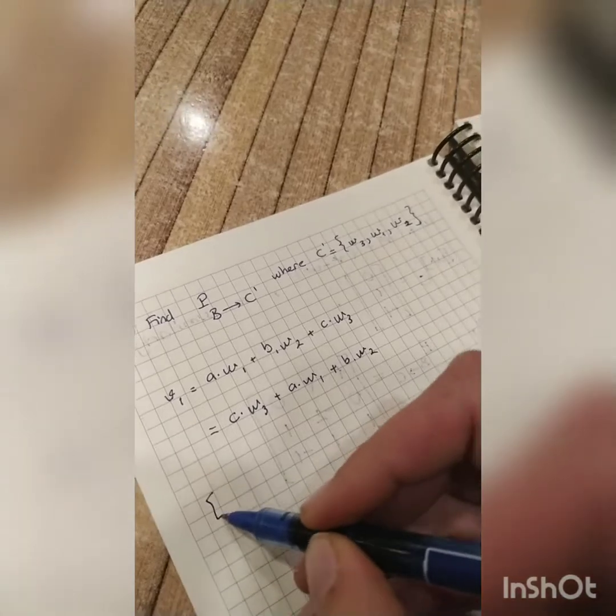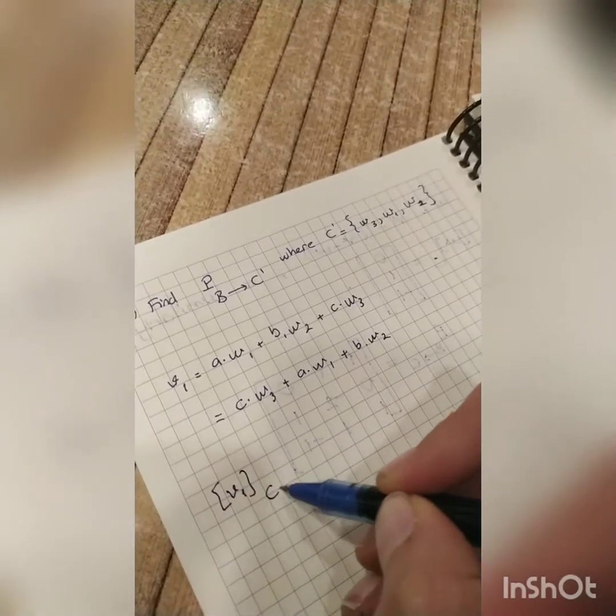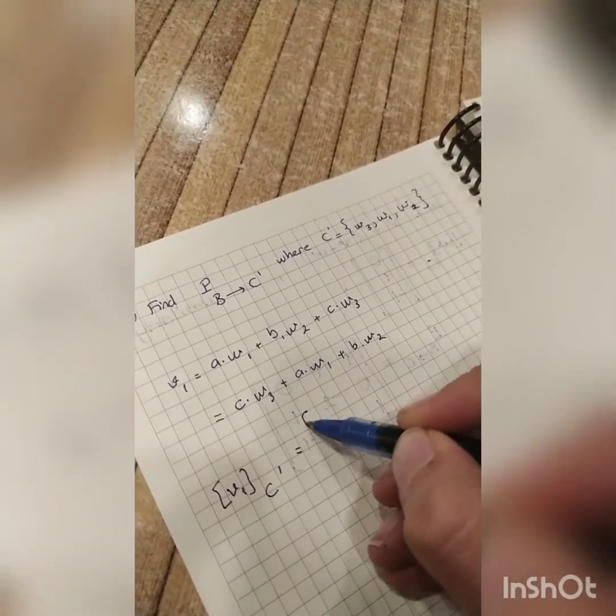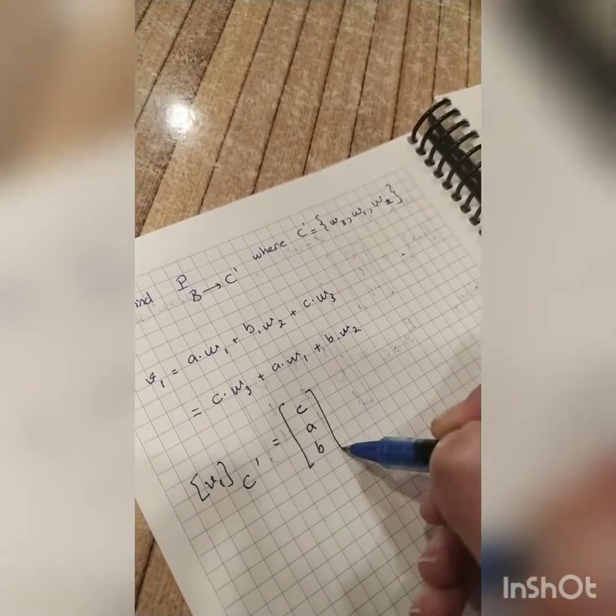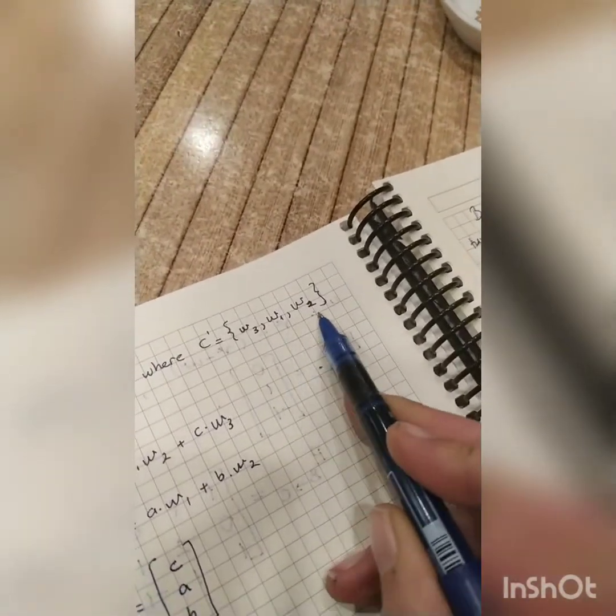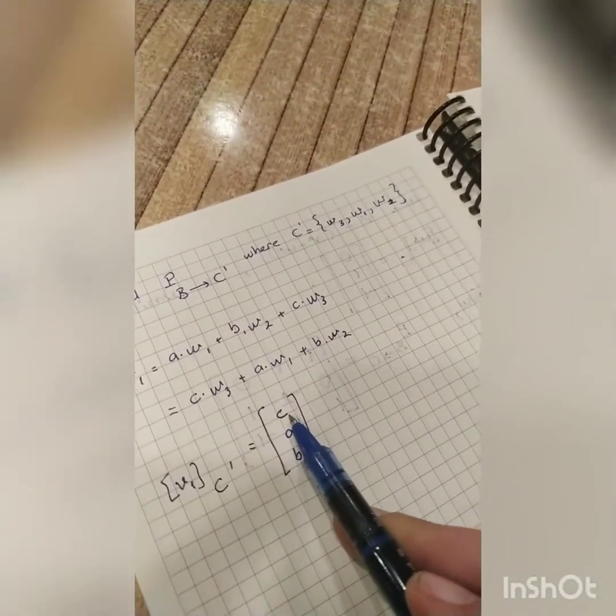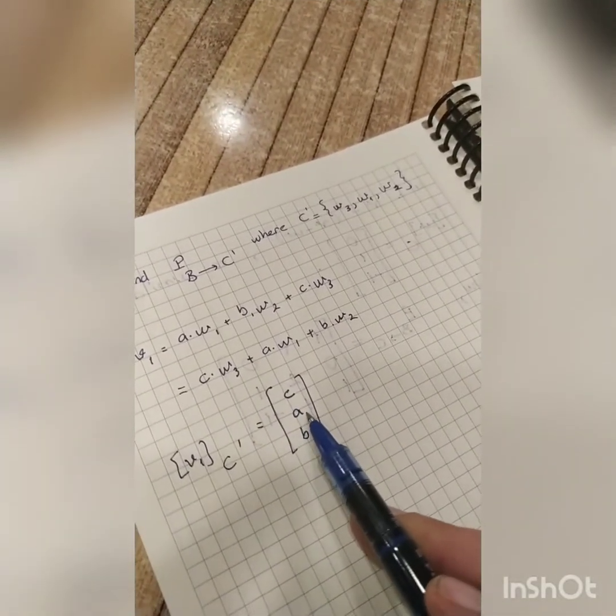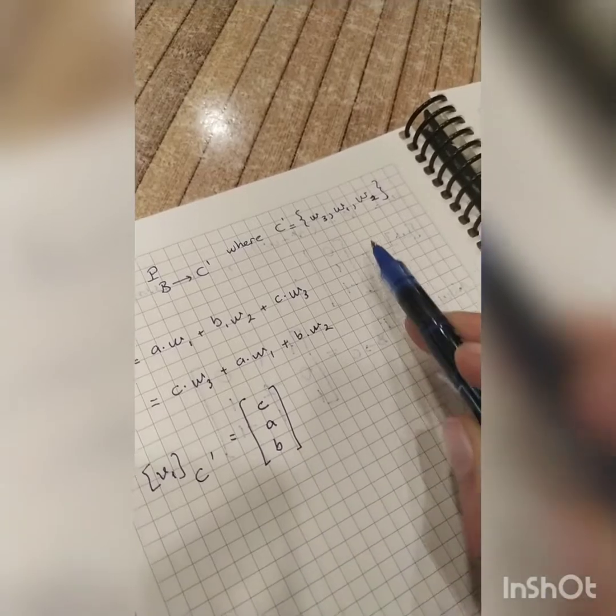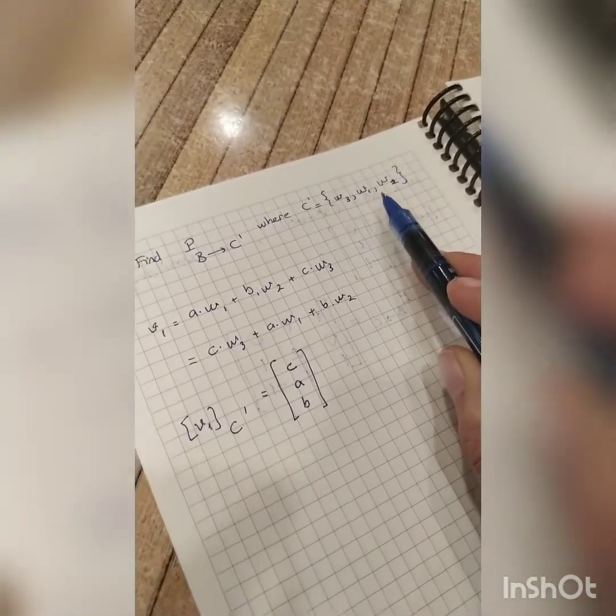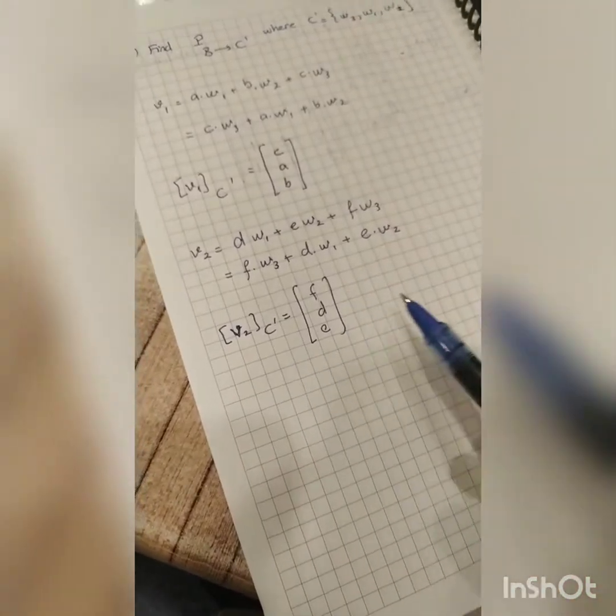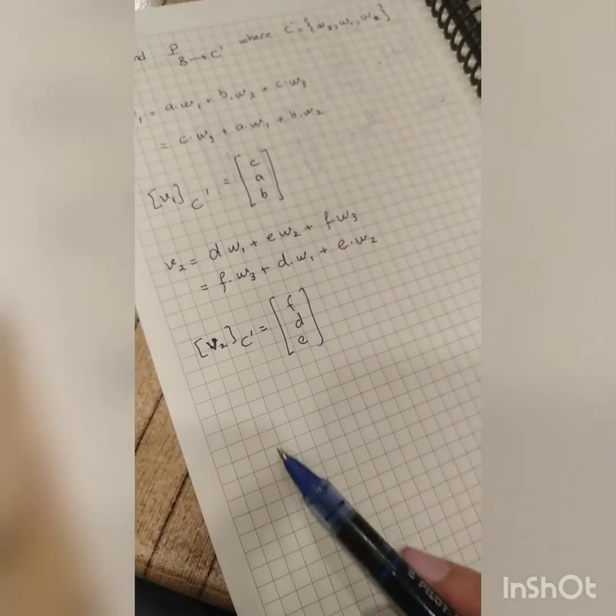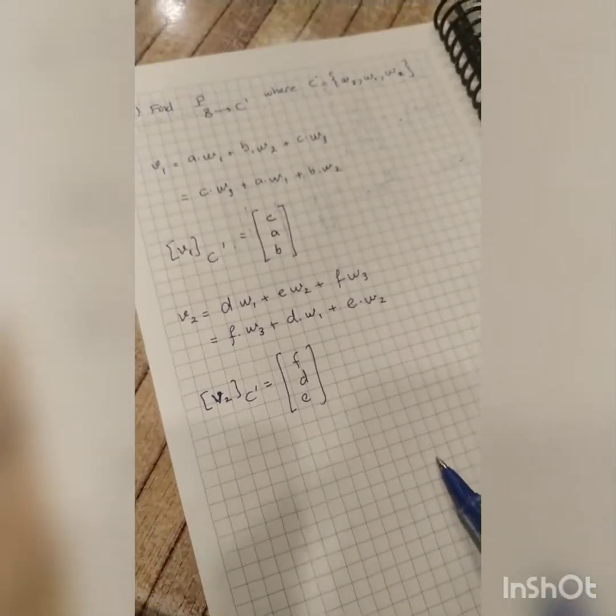As you see, the coordinates of V1, according to the basis C prime, become C, A, and B, because the vectors are in this order, so that I write the coefficients of W3 first, then W1, and then W2, because of this given order. I do the very same thing for V2, and then I will do the very same thing for V3, and then I will write these column matrices inside the matrix.